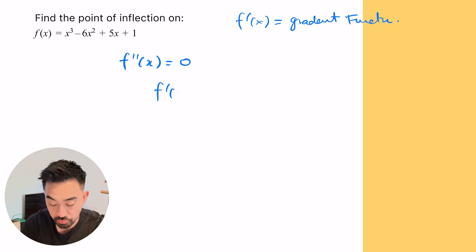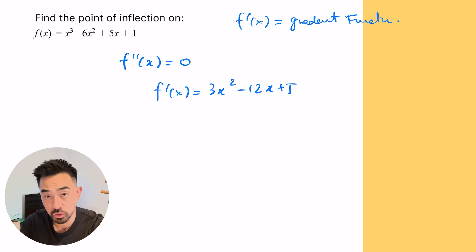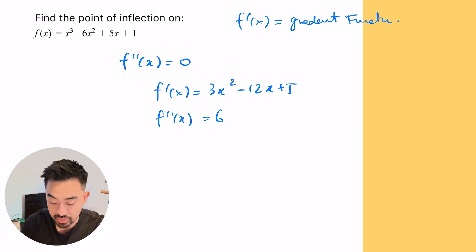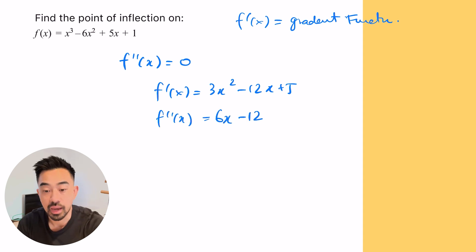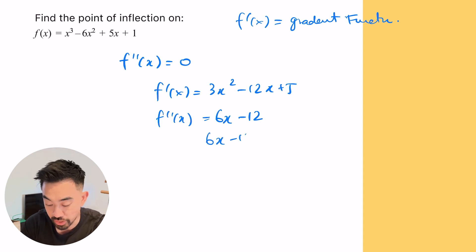Finding the first derivative gives us three x squared minus 12x plus five. Differentiating again, that's six x minus 12. And now we need to solve for this equal to zero to find any points of inflection. So six x minus 12 equals zero, so x is equal to two.